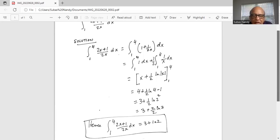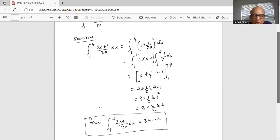Hence the final result for the integration of 2x plus 1 divided by 2x from 1 to 4 is equal to 3 plus ln 2.